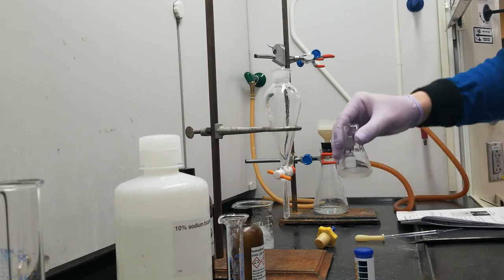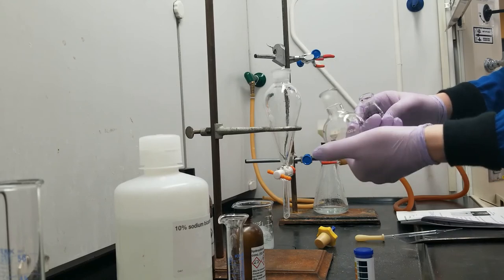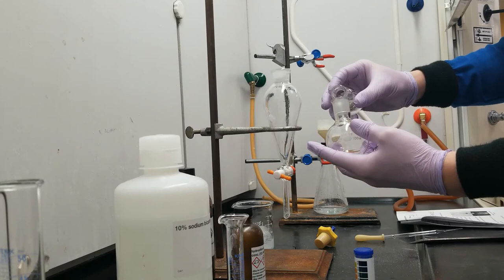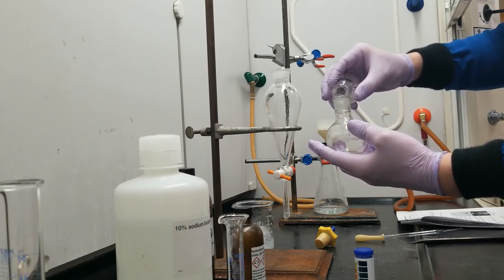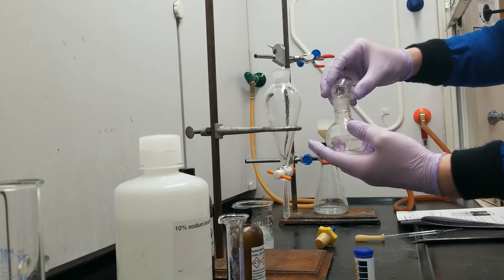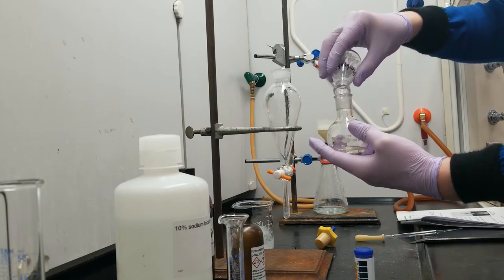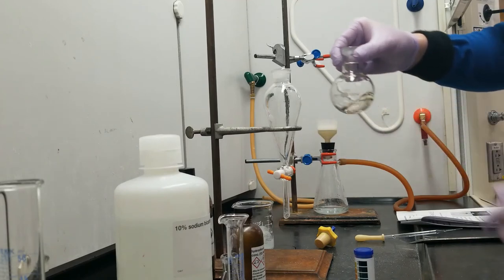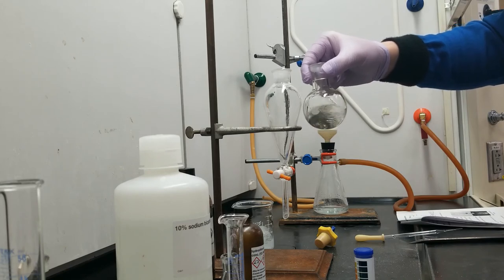So now I've got a nice dry organic layer packed with acetanilide. Let's go ahead and transfer it to my pre-weighed round bottom flask that can go onto the rotavap. And I'm just going to decant, leaving the solid behind. Almost made it out. Ta-da! So I'm going to take this over to the rotavap now, and let's remove the diethyl ether and see how much acetanilide we have.